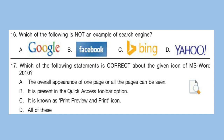Question 17: Which of the following statements is correct about the given icon of MS Word 2010? Options are: A. The overall appearance of one page or all pages can be seen. B. It is present in the quick access toolbar option. C. It is known as print preview and print icon. D. All of these. The correct answer is option D — all of these.